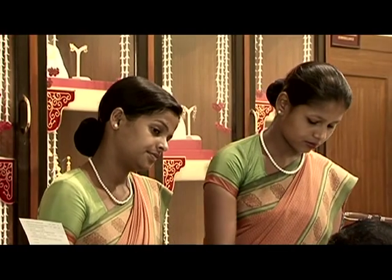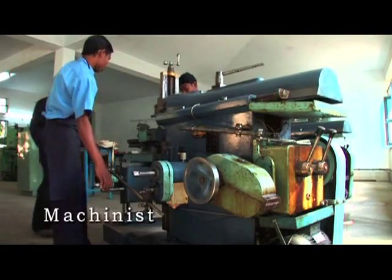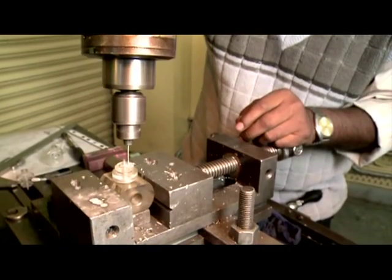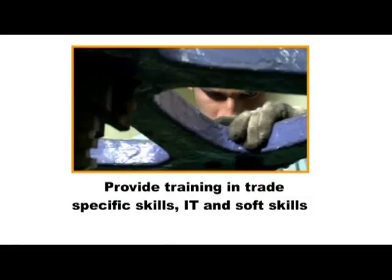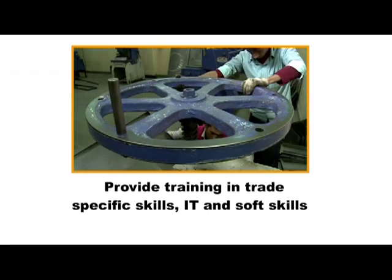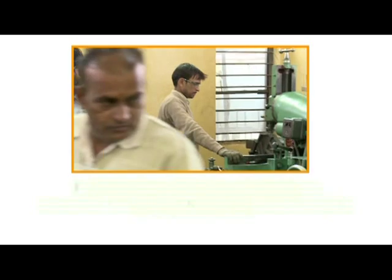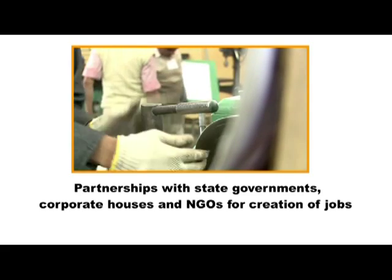Aajeevika caters not only to women, but also fulfills the occupational aspirations of rural youth. The Aajeevika Skill Development Programme seeks to reduce poverty by diversifying incomes of the rural poor, providing training in trade-specific skills, IT and soft skills, and guarantees 75% placement to all those trained, through partnerships with state governments, corporate houses, and NGOs for creation of jobs.